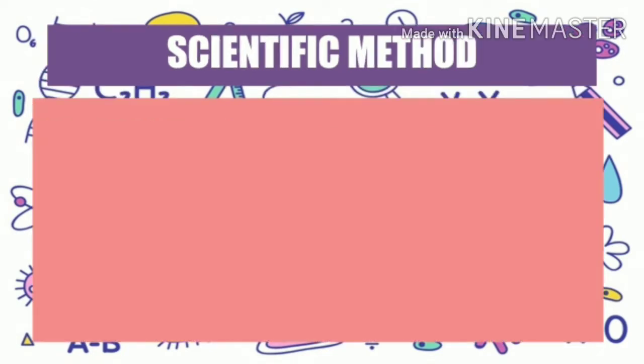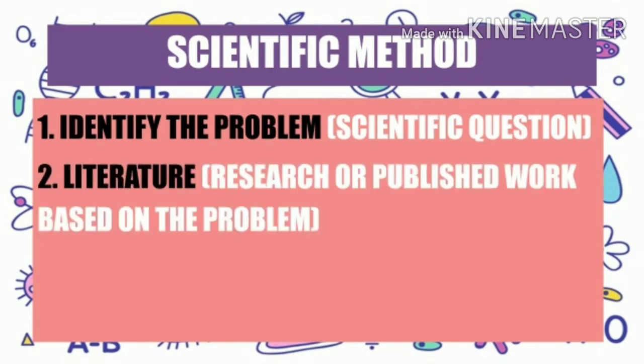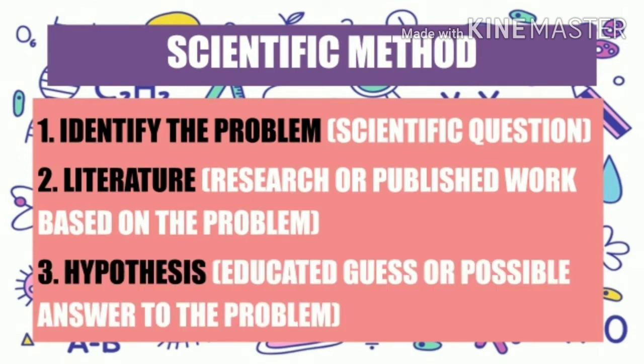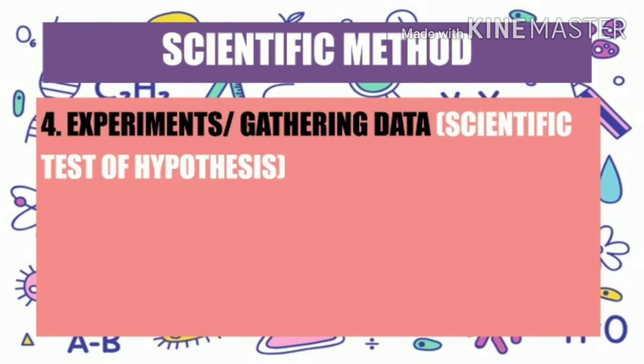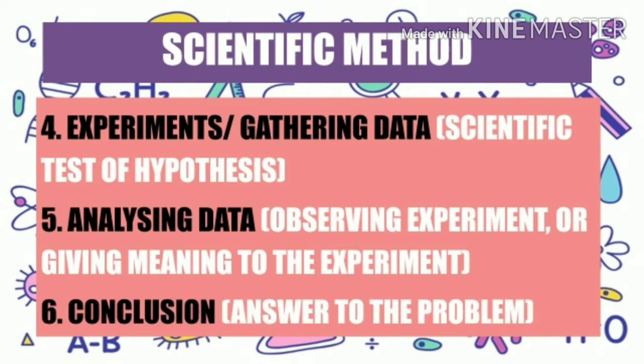Basically, there are six steps in the scientific method. First, identify the problem. Second, literature review or research — published work based on the problem. Third, hypothesis. Fourth, experiment or gathering of data. Fifth, analyzing of data. And last but not the least, conclusion.